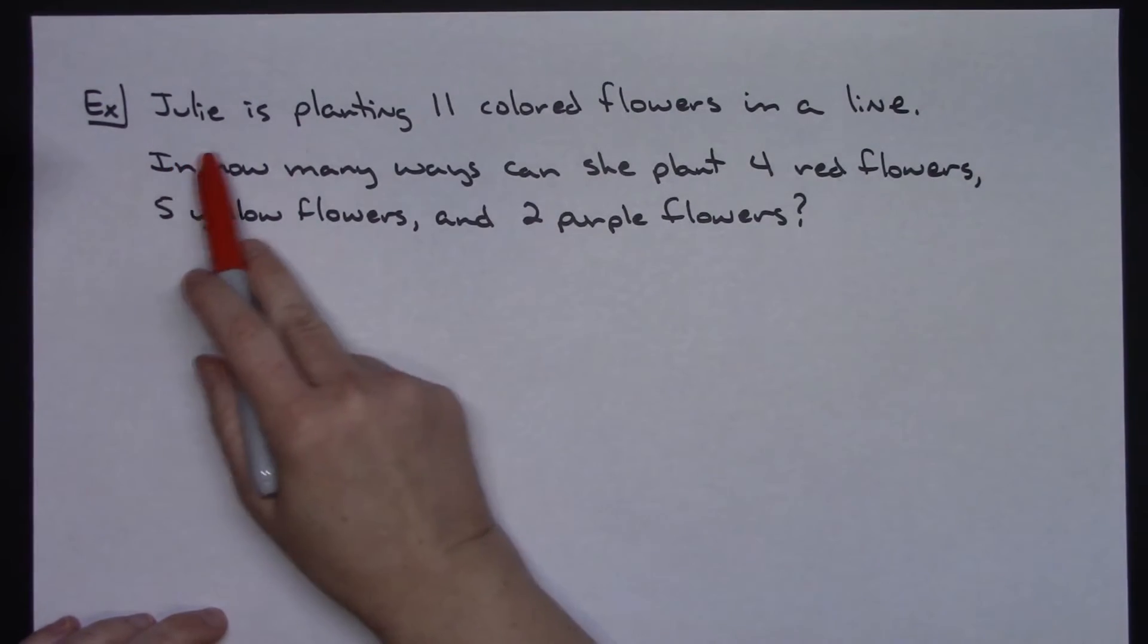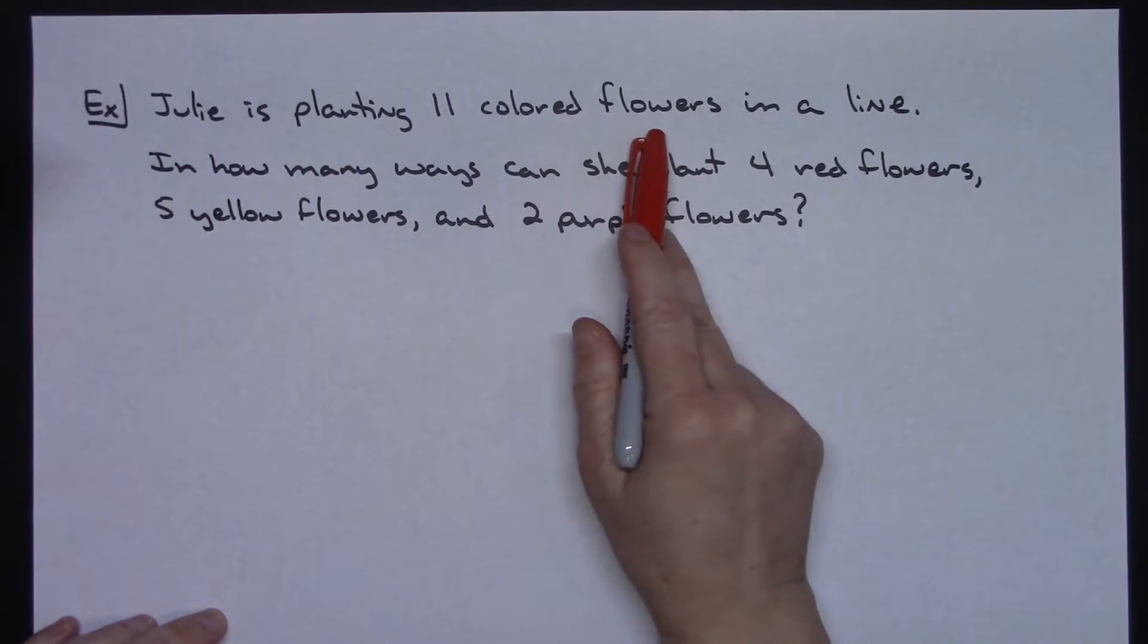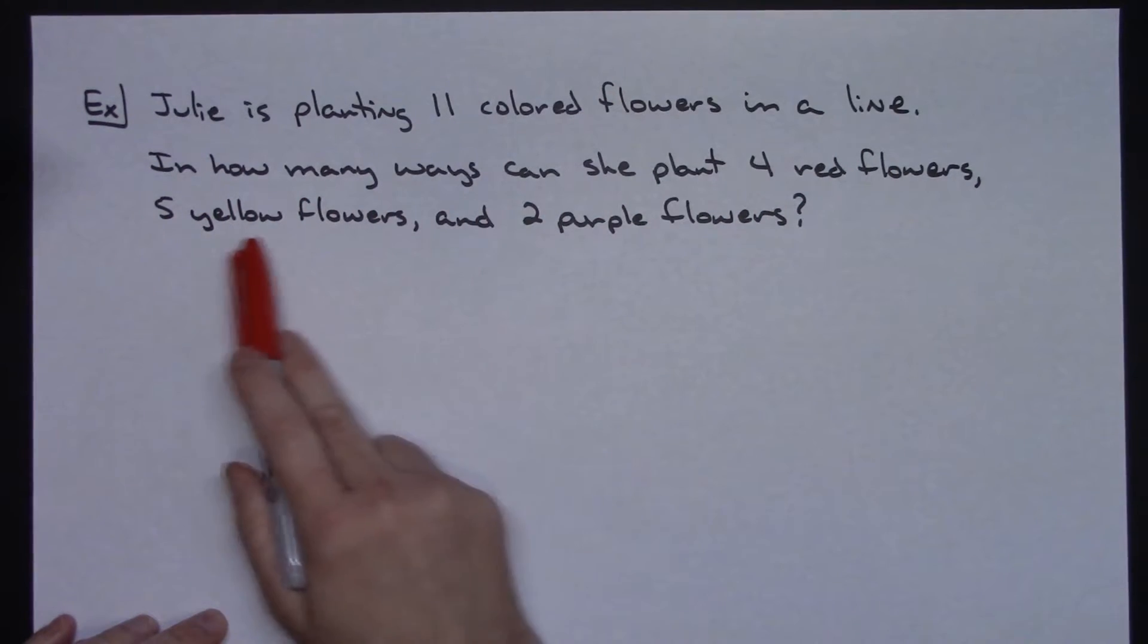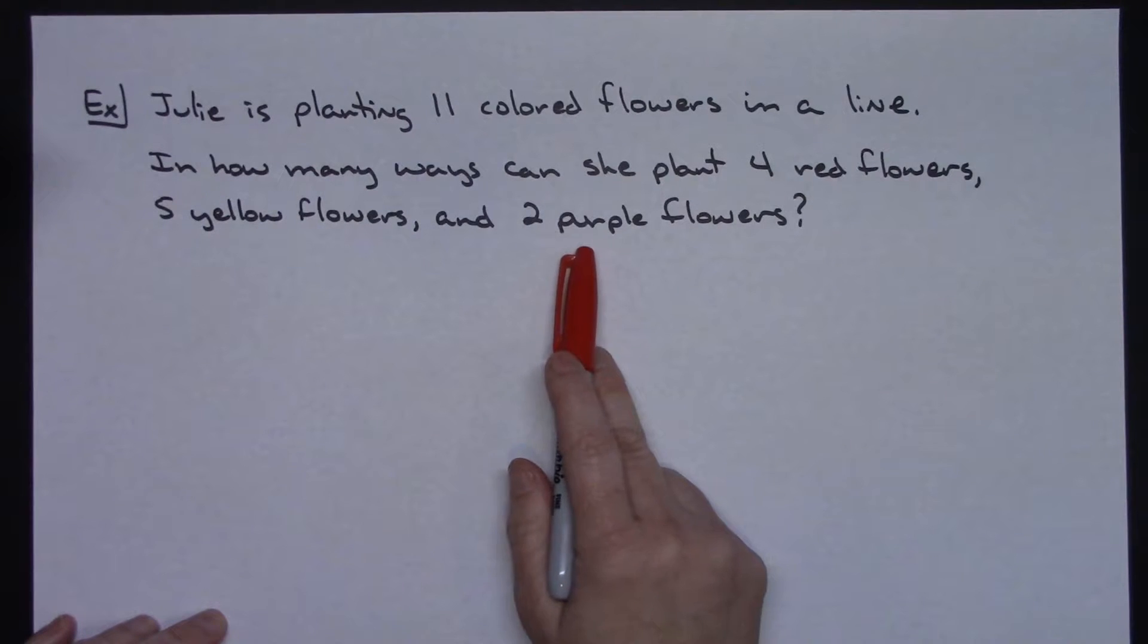Let's say Julie is planting 11 colored flowers in a row. In how many ways can she plant 4 red flowers, 5 yellow flowers, and 2 purple flowers?